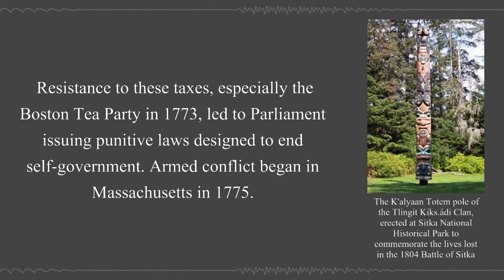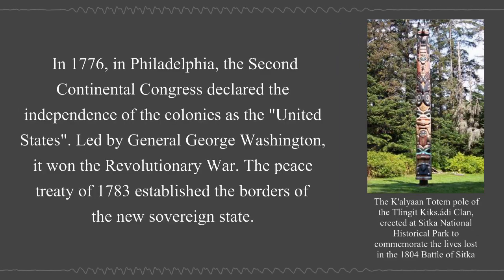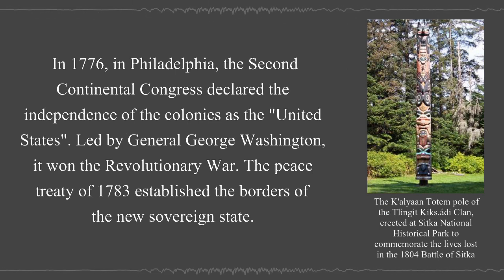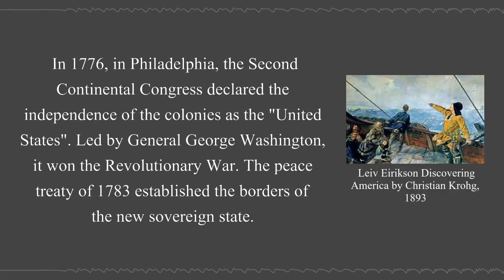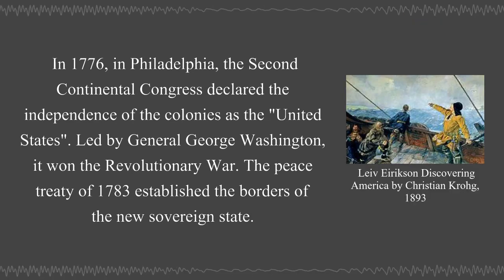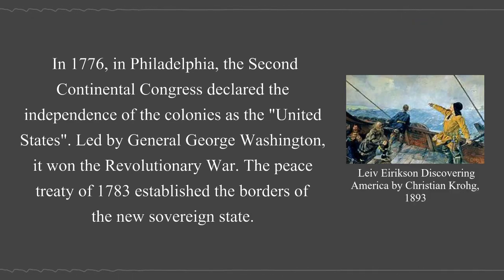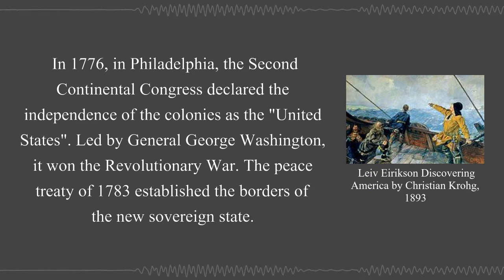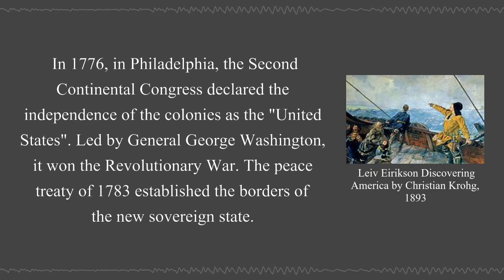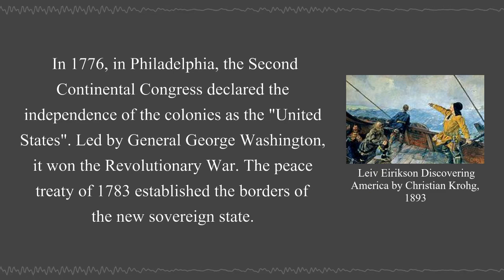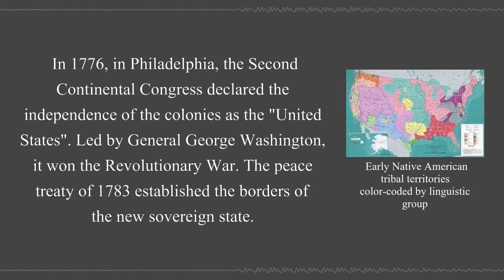Armed conflict began in Massachusetts in 1775. In 1776, in Philadelphia, the Second Continental Congress declared the independence of the colonies as the United States. Led by General George Washington, it won the Revolutionary War. The Peace Treaty of 1783 established the borders of the new sovereign state.